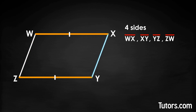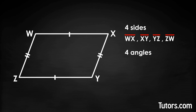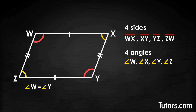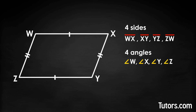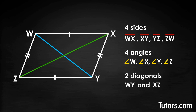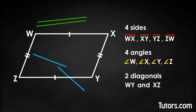Line segments XY and ZW are also congruent. The interior angles are angle W, angle X, angle Y, and angle Z. The opposite angles are congruent — in our parallelogram, angle W equals angle Y and angle X equals angle Z. Connecting opposite non-adjacent vertices gives you diagonals WY and XZ.